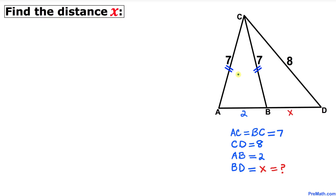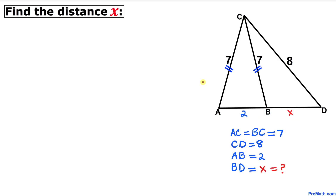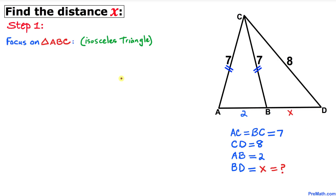Welcome to Premath. In this video tutorial we have an isosceles triangle ABC inside another triangle ACD, such that line segment AC and line segment BC are 7 units each. Moreover, line segment CD is 8 units and line segment AB is 2 units. Now we are going to find the value of distance X. Let's get started with the solution.